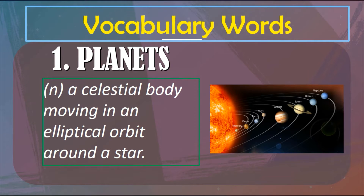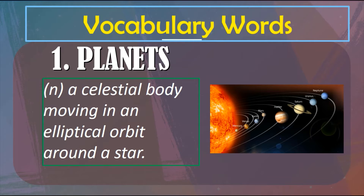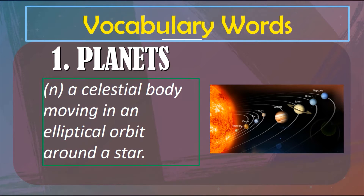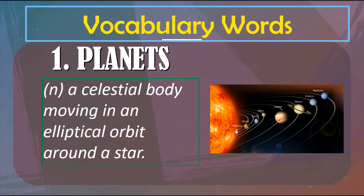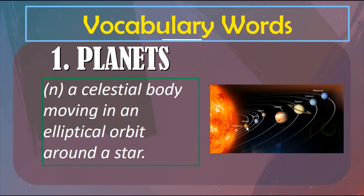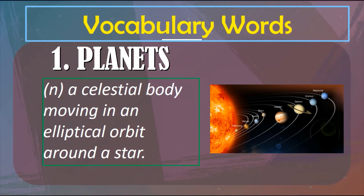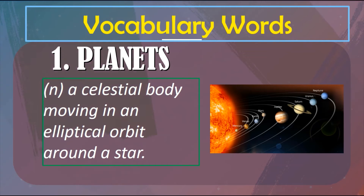Number one: Planets. A planet is a celestial body moving in an elliptical orbit around a star. You can see here that there are eight planets in our solar system. Let's count: one, two, three, four, five, six, seven, eight. There are eight planets in our solar system.